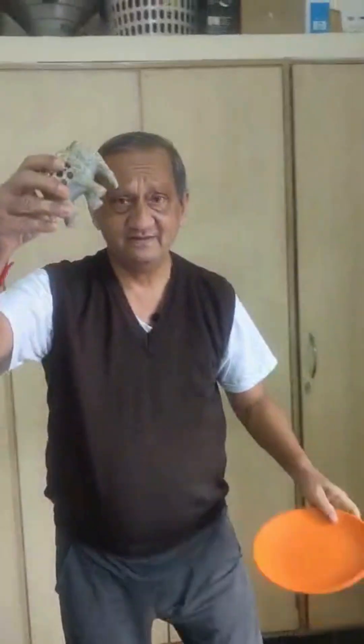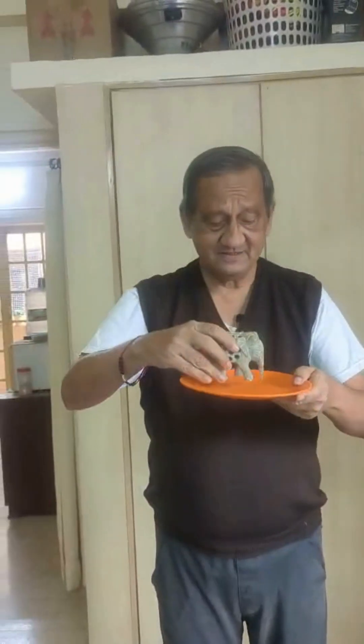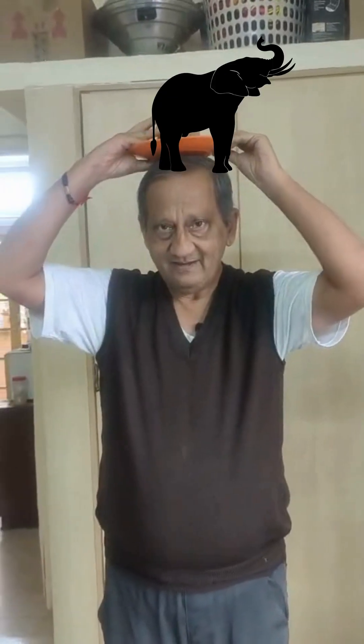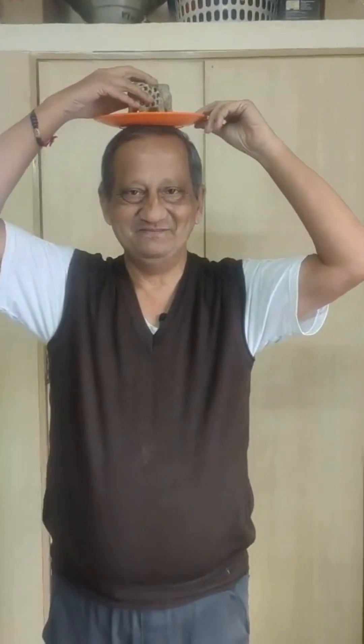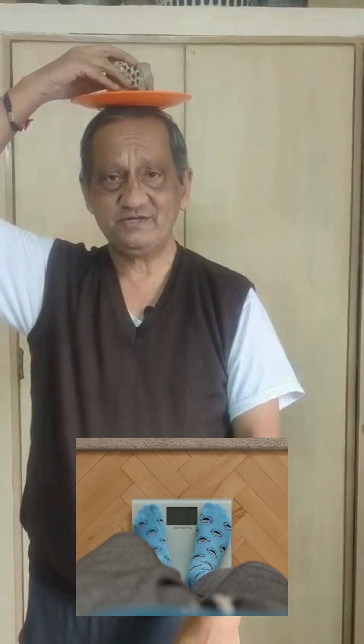Now suppose I keep an elephant on my head — this is a toy elephant on a certain platform — and I keep the elephant on my head and I'm smiling. No problem, I'm supporting the weight, the weighing machine reading will go up slightly.